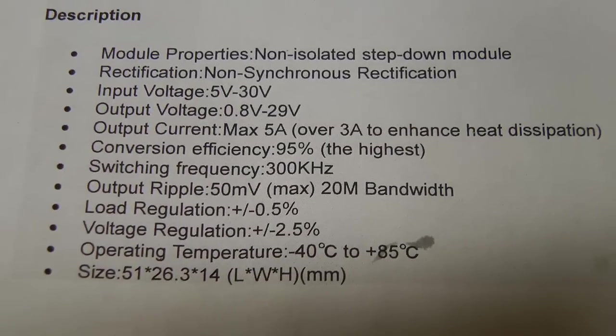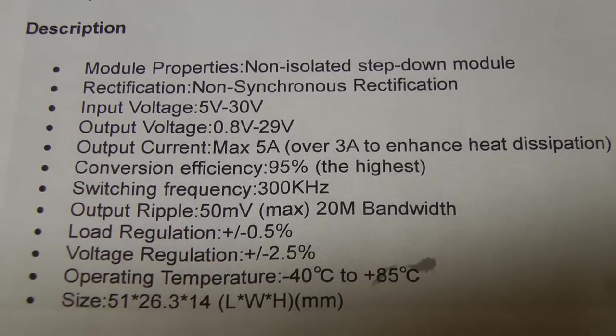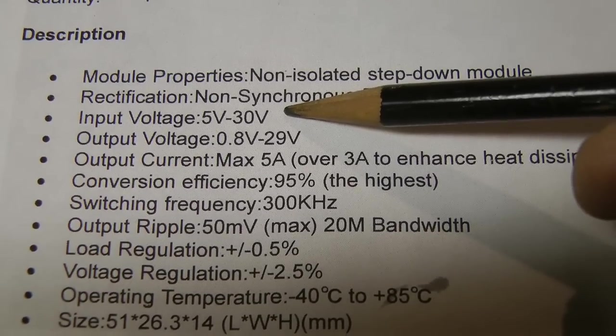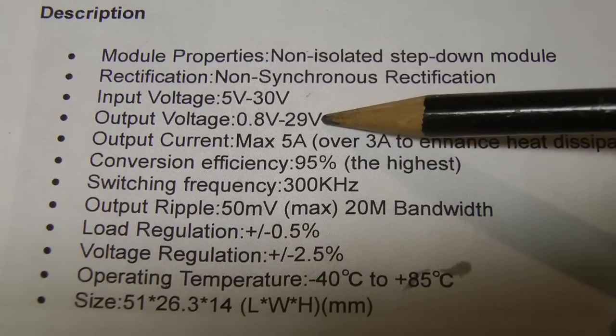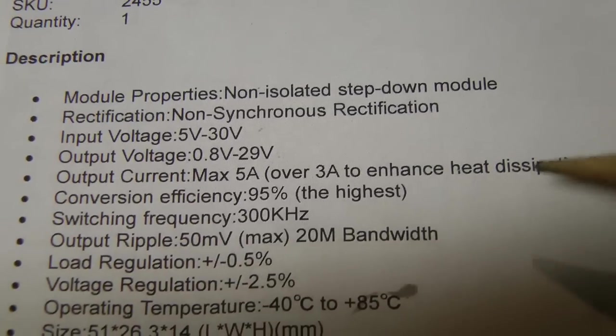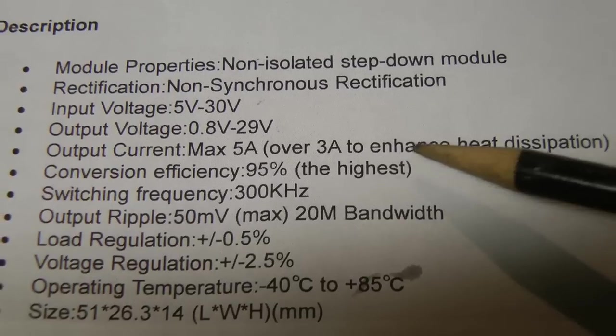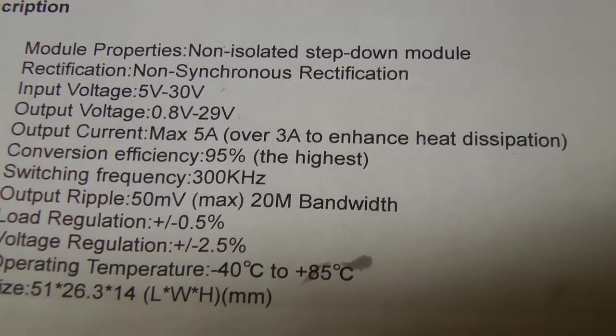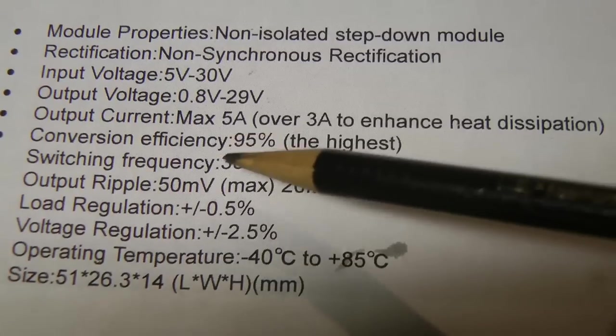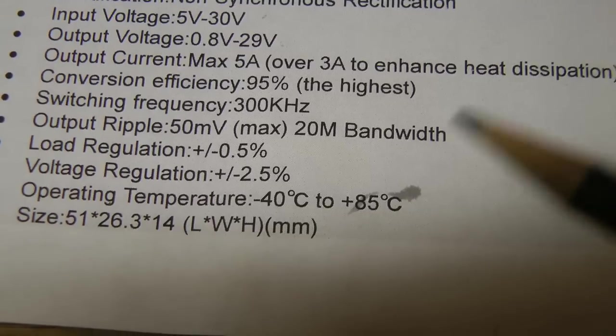I wanted to make a point about a few things here on the specifications. The more important things I'll post in the video description, but notice that this is an input voltage of 5 to 30 volts and an output of 0.8 to 29 volts. Notice the note on the amperage says 5 amps, over 3 amps to enhance heat dissipation. I think they're saying that if you're using more than 3 amps you're going to have to run some sort of heat sink or cooling fan. Keep in mind about that 0.8 volts, I have something to show you here pretty soon.